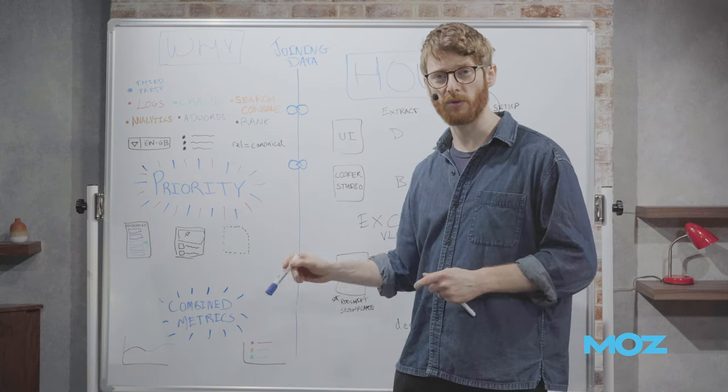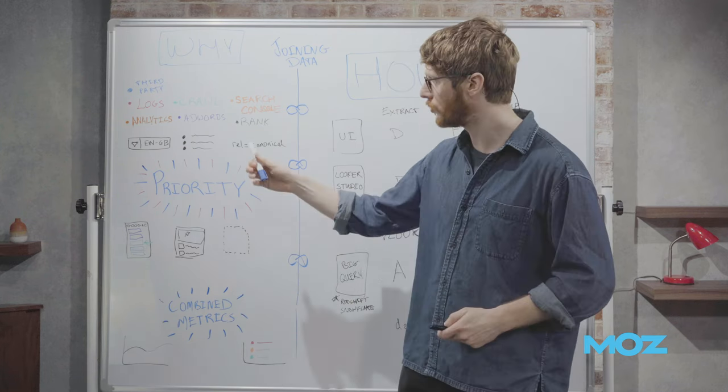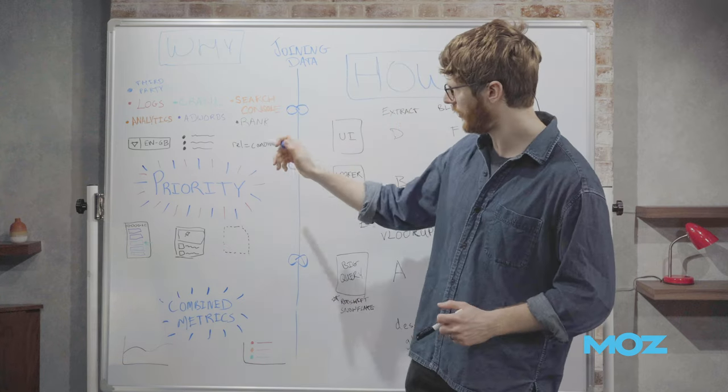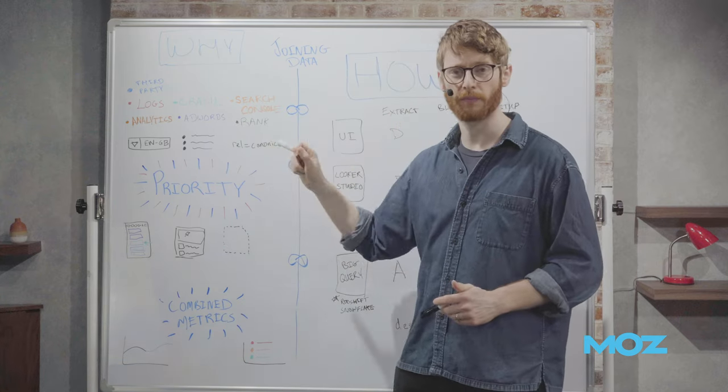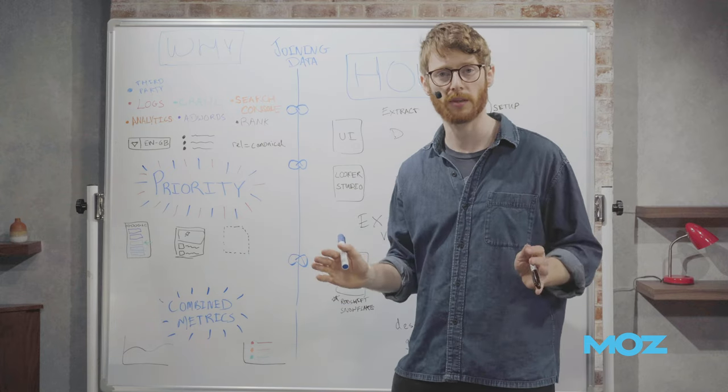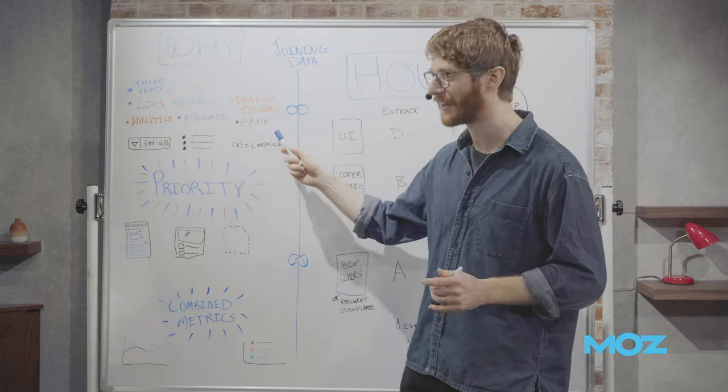Secondly, combined metrics. There are just some things that cannot be done unless you join two things together. So let's do priority first as this is the big one. Firstly, we're going to take the example of canonicals. Suppose that we have some canonical problems across our website. Let's say we run a big e-commerce site and we have some canonical problems on our category pages, on our product pages.